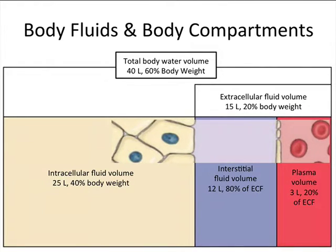Body fluids: the average adult has about 40 liters of fluid, which is approximately 60% of body weight. This is divided into three compartments. If you were to ask someone where all the fluid in your body is, they would probably say it's all in your blood.